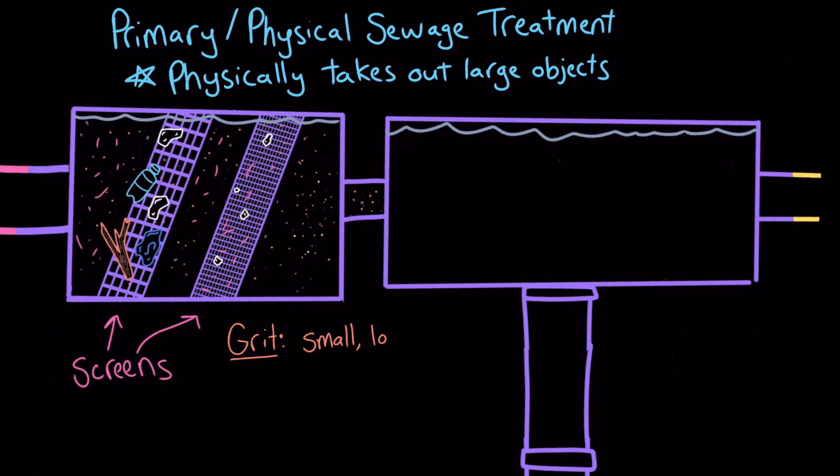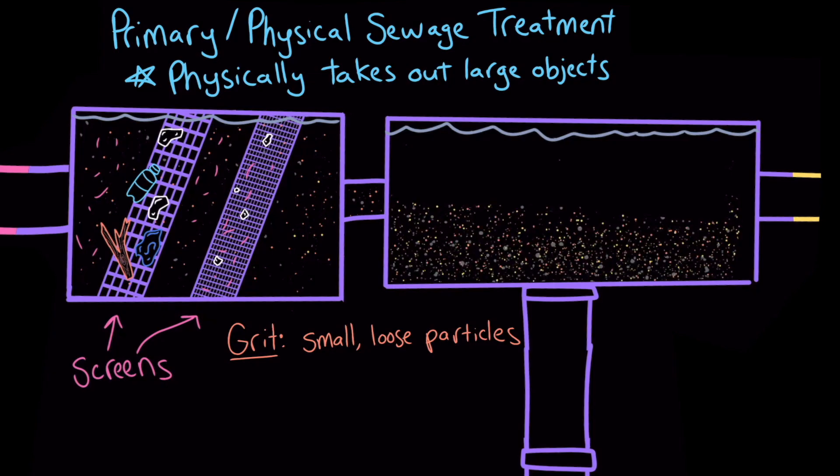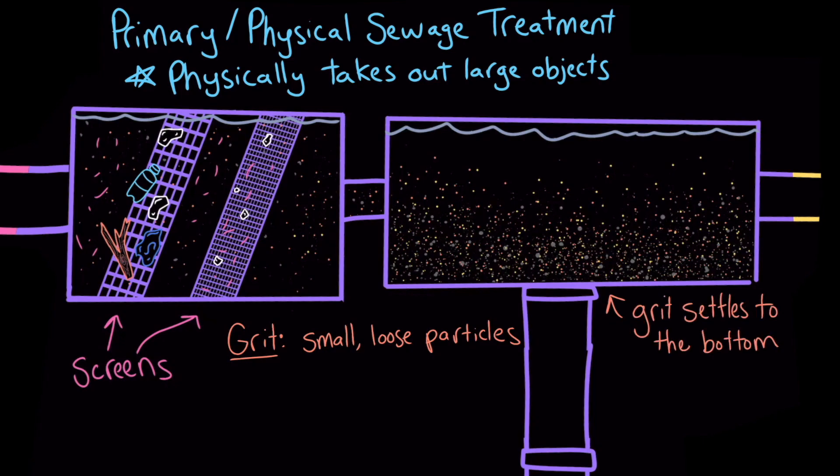Grit is made up of small, loose particles of sand, gravel, coffee grounds, food waste, and other pieces of material. To get rid of the grit, the treatment plant pumps the water through long, narrow tanks that slow down the flow enough that the grit has time to settle to the bottom. All that thick, soft mud that gathers at the bottom of the grit tank is called sludge, and it's collected and treated.